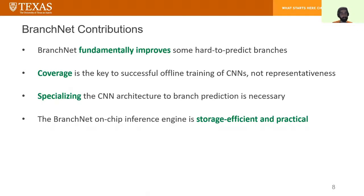We built on the work of Tarsa and others to come up with BranchNet. BranchNet is a CNN that fundamentally improves some otherwise hard to predict branches. Using BranchNet, we show that coverage is the key to successful offline training of CNNs, not representativeness in profiling. Furthermore, we show that specializing the CNN architecture is absolutely necessary for branch prediction. And we also show that the BranchNet on-chip inference engine is both storage efficient and practical.